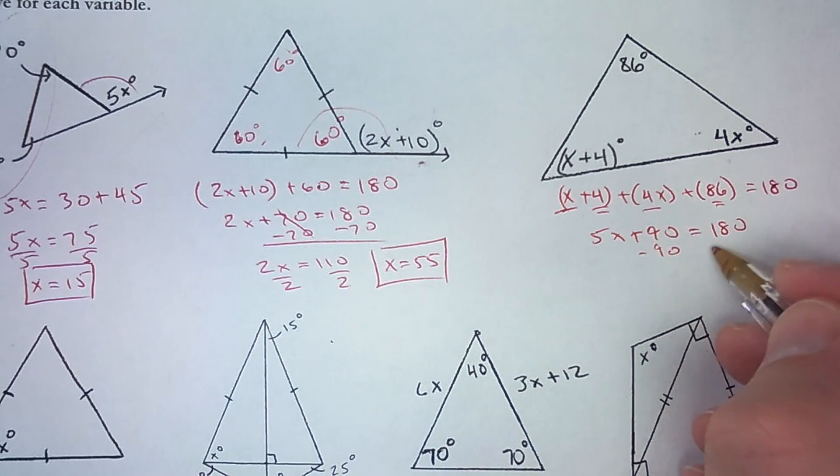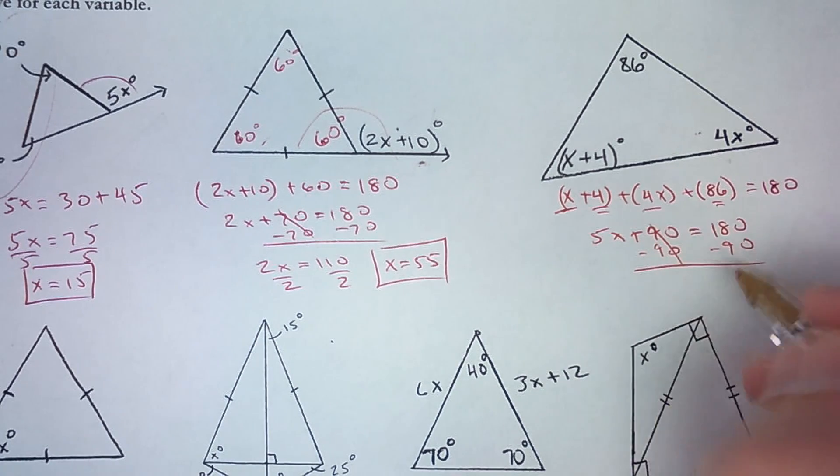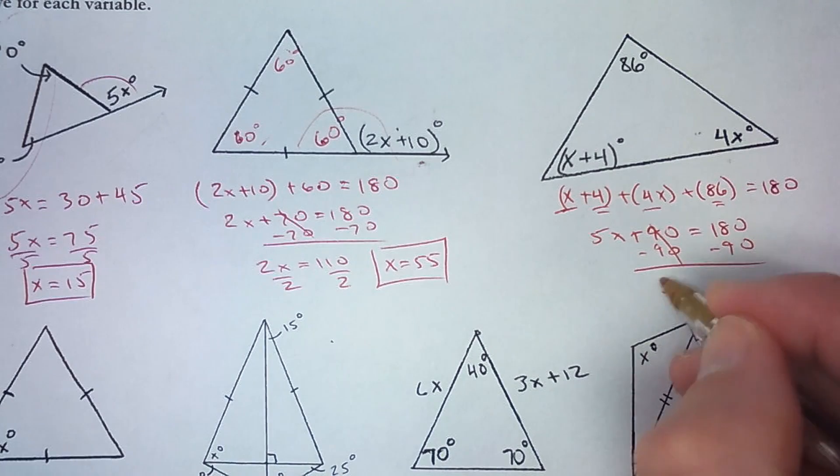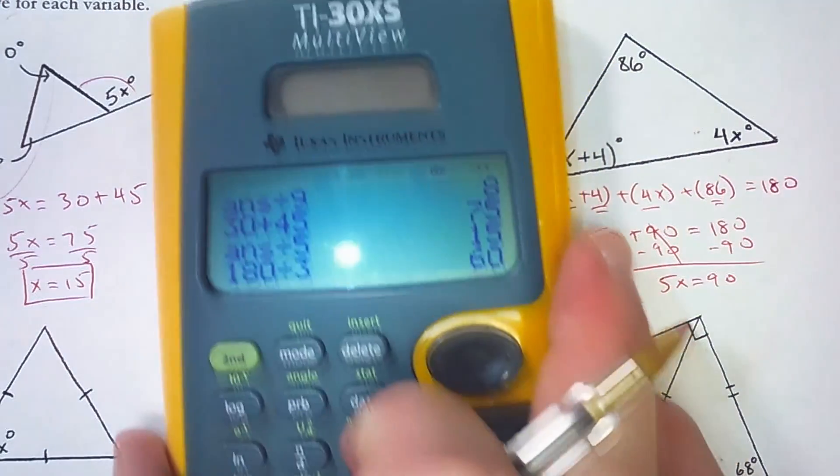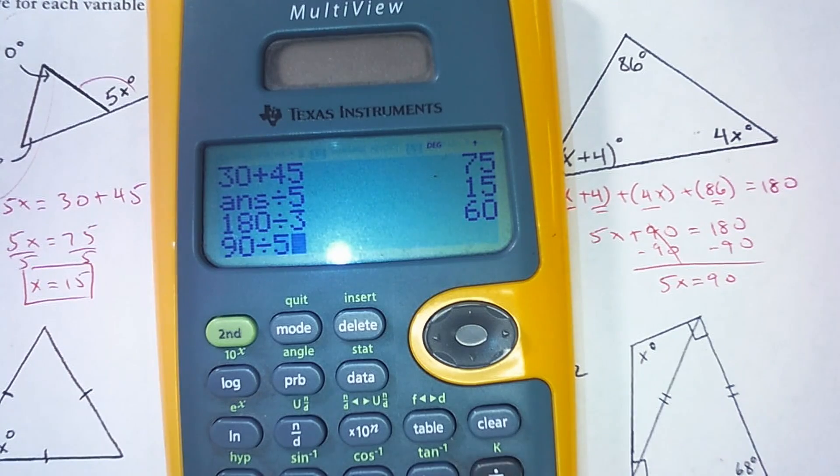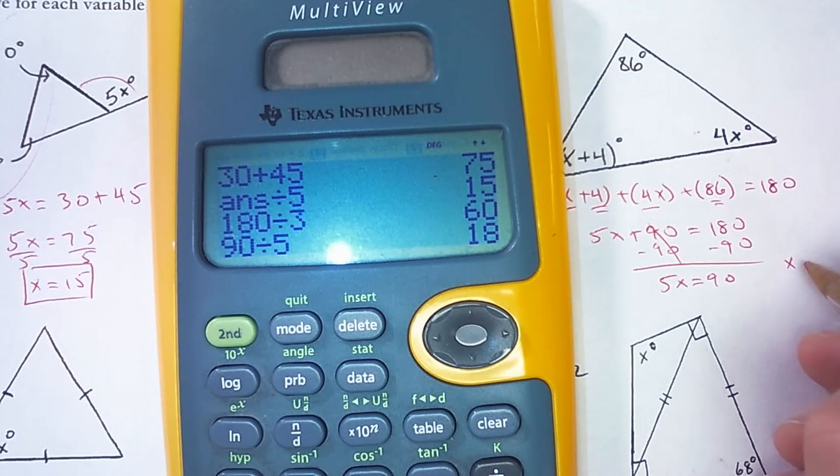And I can subtract 90. And 180 minus 90 is 90. So 5x equals 90. And then 90 divided by 5 is 18. So x is 18.